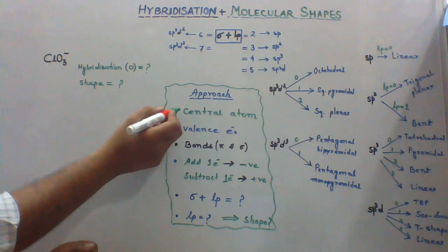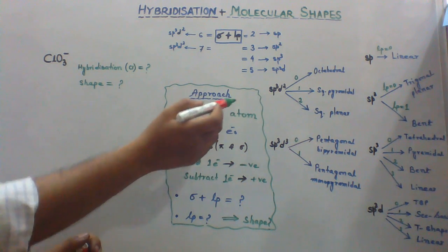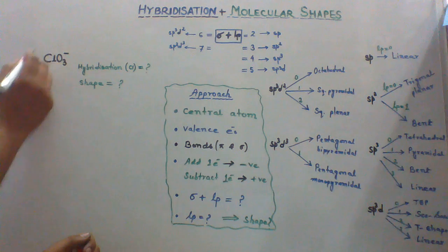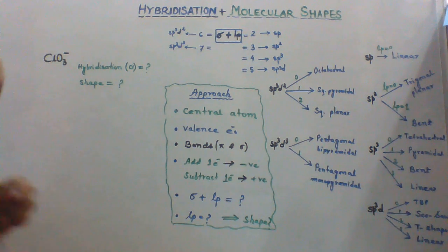First, you have to identify the central atom. In the given species, the central atom is chlorine.